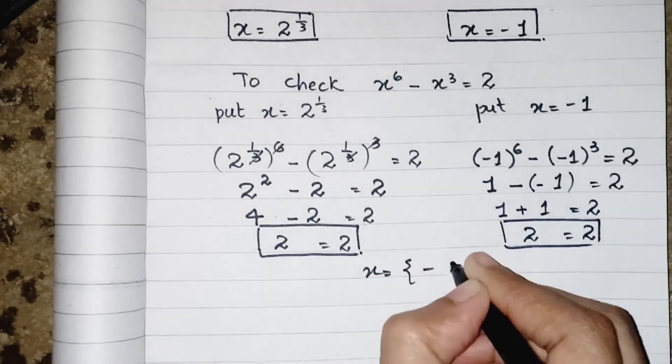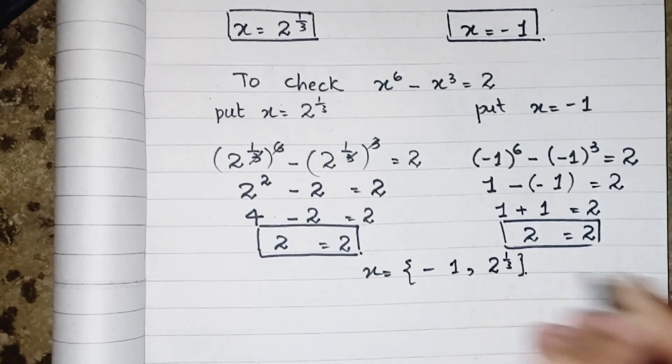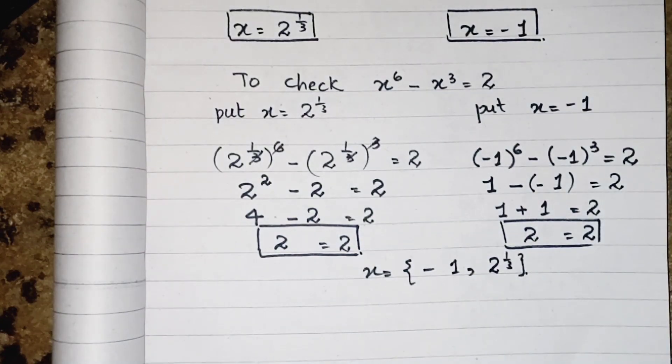So x equals to minus 1 and 2's power 1 upon 3. Hope you like the video. Do subscribe. Take care. Bye-bye.